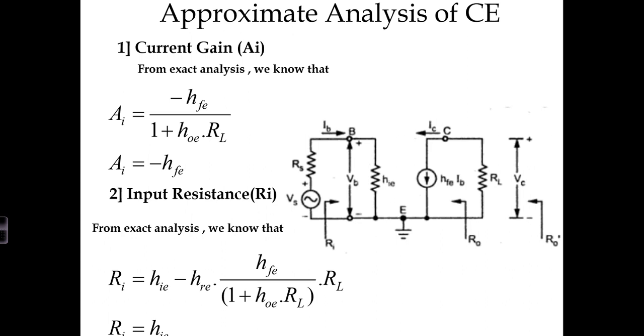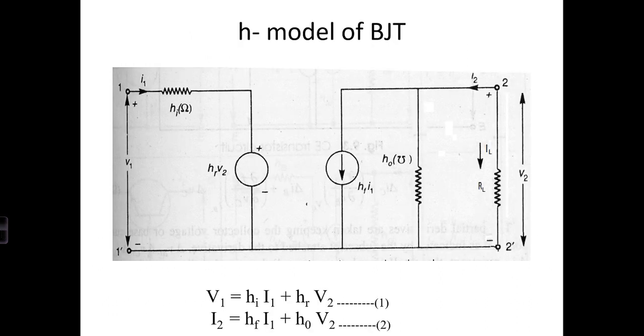In approximate analysis, we discard two parameters from the exact model. The earlier exact analysis included all H model parameters: HI, HR, HF, and H0. For approximate or simplified analysis, we discard two parameters which are not significant: HR (reverse voltage gain) and H0 (output admittance).